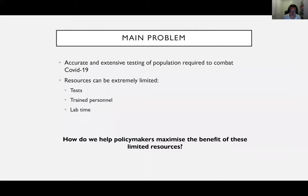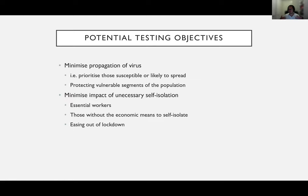One key observation was that inaccurate and extensive testing in the population has been required to combat the virus. Countries around the world have partaken in extensive testing activities within their capacity, and this has been one of the fundamental tools used to combat the pandemic. But in practice, resources can be extremely limited — tests, but also everything ranging from trained personnel to lab time to vaccines. The question we wanted to bring with an optimization approach was how to aid policymakers in maximizing the benefit of these limited resources.